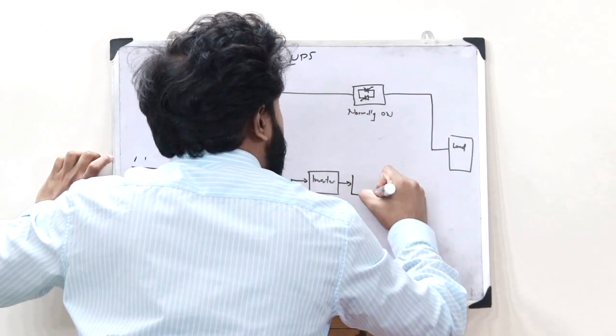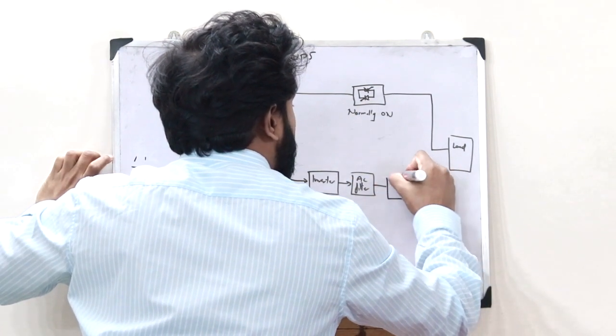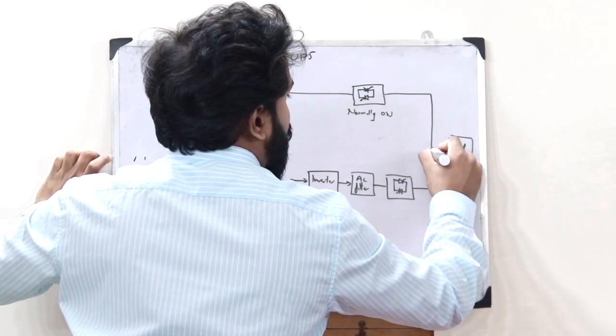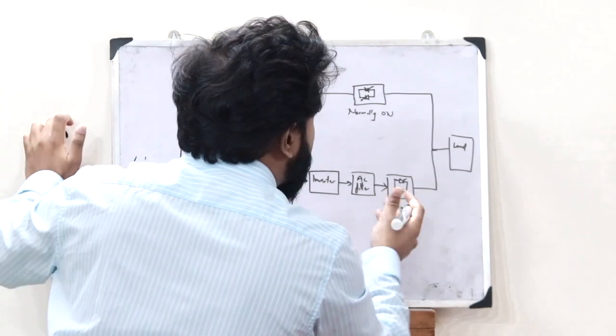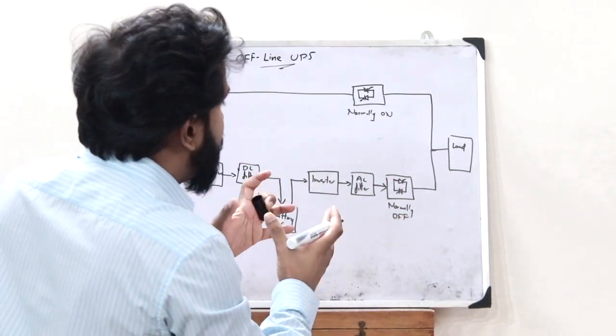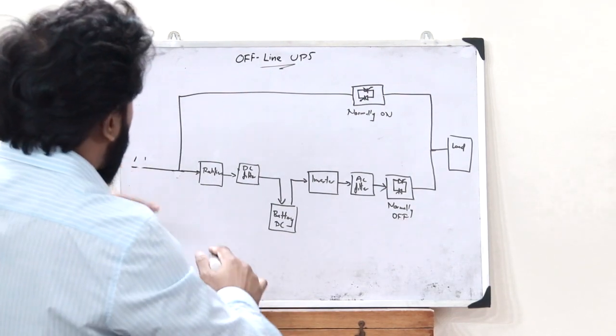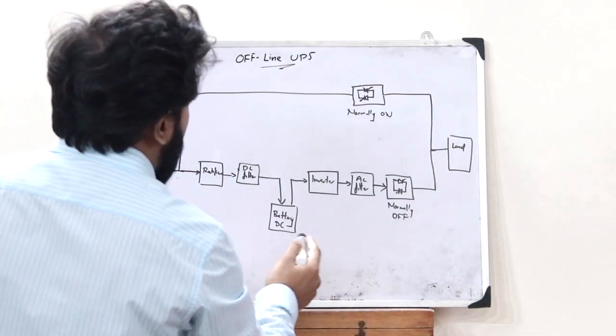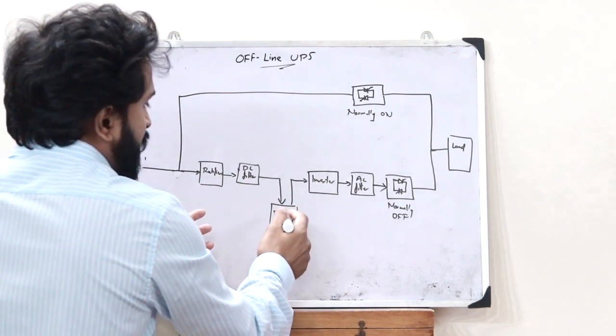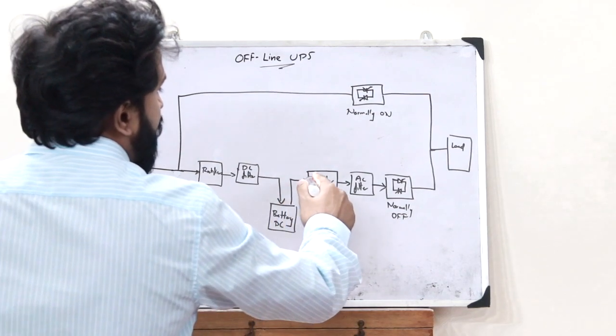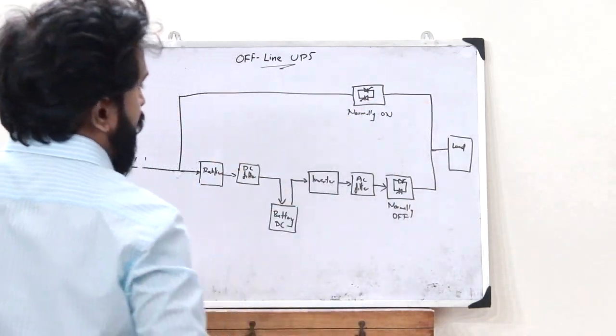This is then connected to an AC filter, which is connected to a static switch, and from here it is connected to the load. This static switch is normally off—it is only turned on when the input AC voltage is cut off. The DC voltage stored inside the battery gets converted into AC voltage, and therefore AC voltage is supplied to the load.